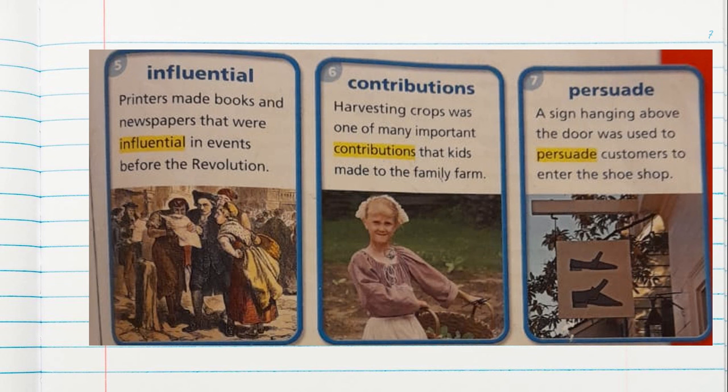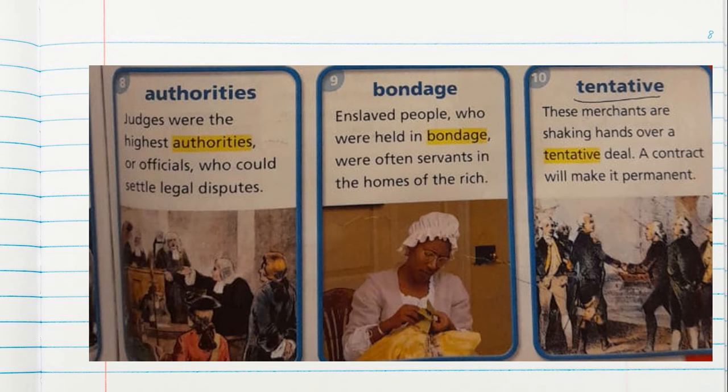Persuade: a sign hanging above the door was used to persuade customers to enter the shoe shop. Authorities: judges were the highest authorities, or officials, who could settle legal disputes.